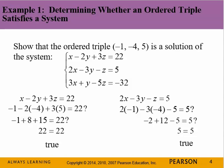Example 1. Determining whether an ordered triple satisfies a system. So, there is our ordered triple. And this would be x, y, and z. So, you might say, how do you do it? Well, it's kind of obvious that you're going to replace the x's with a negative 1, the y with a negative 4, and the z with a 5.